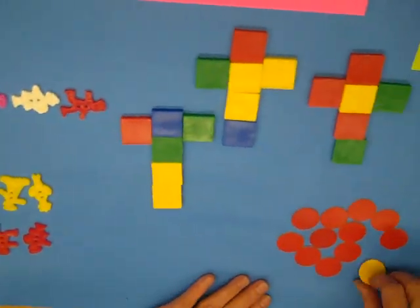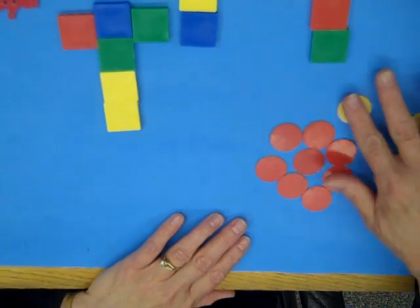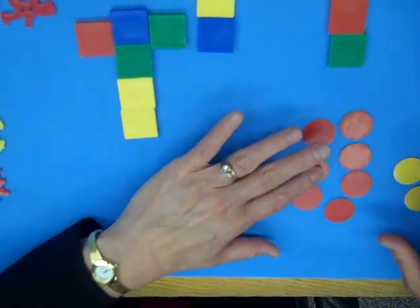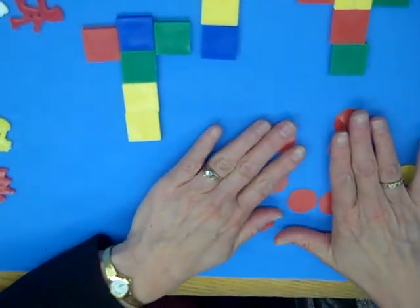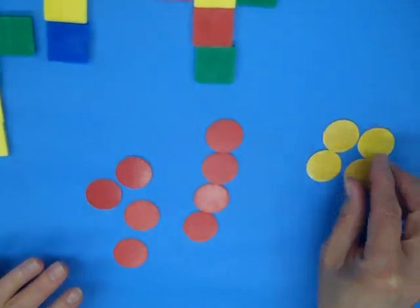We can use double sided counters. These are kind of neat because you can turn them over. So if we were doing thirds, okay, I could put them into groups of four. How many different arrangements could I show?